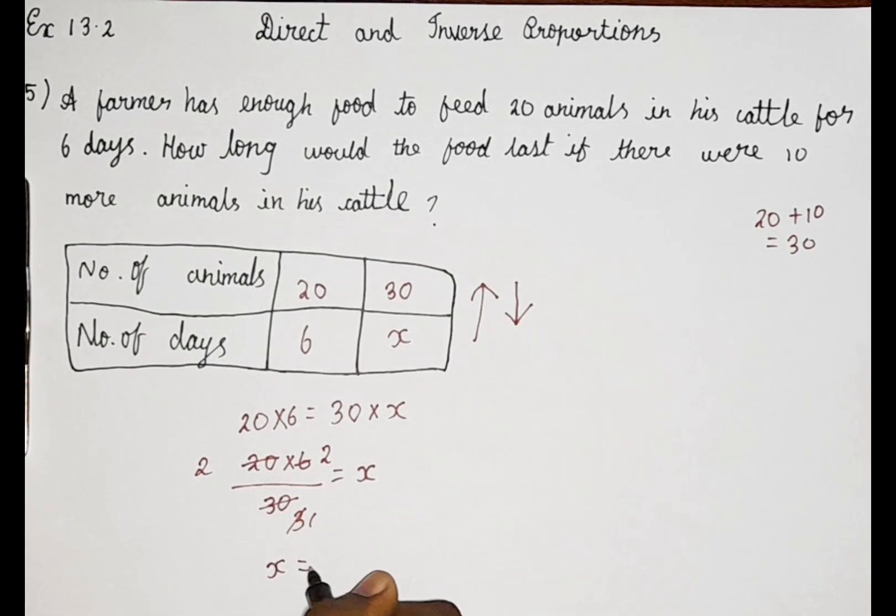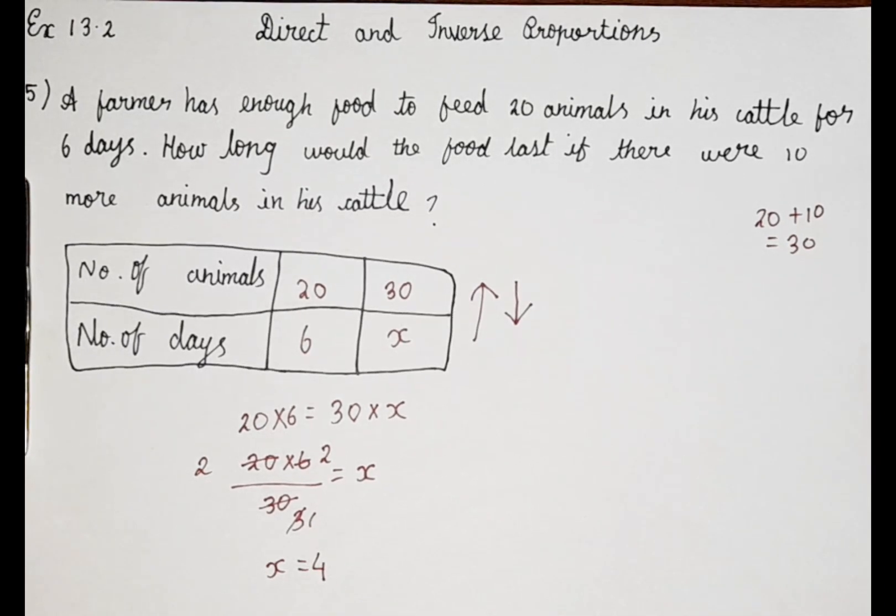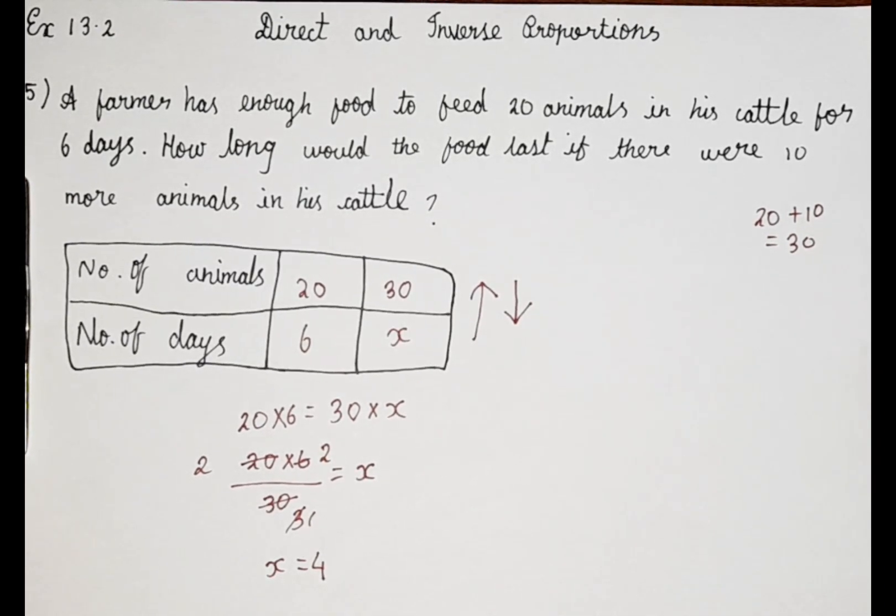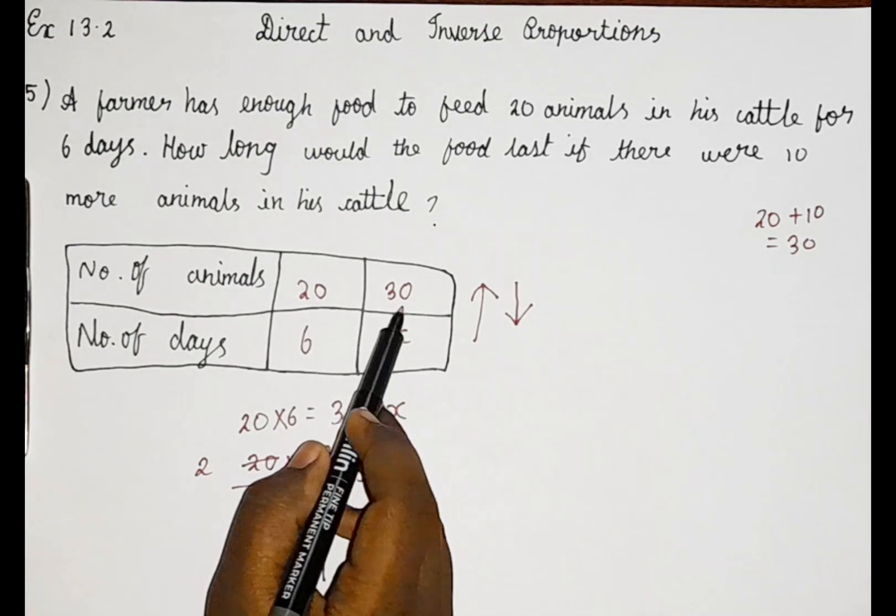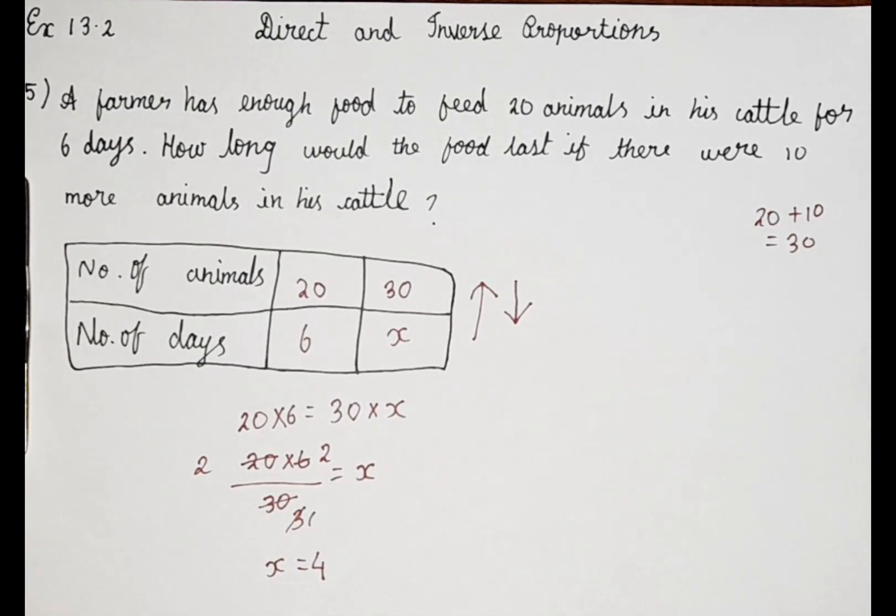So x equals 2 into 2. 2 into 2 is 4. The value of x is 4, which means for 30 animals, he can feed for 4 days.